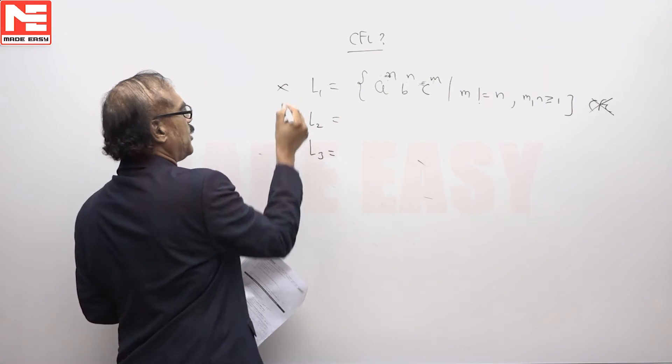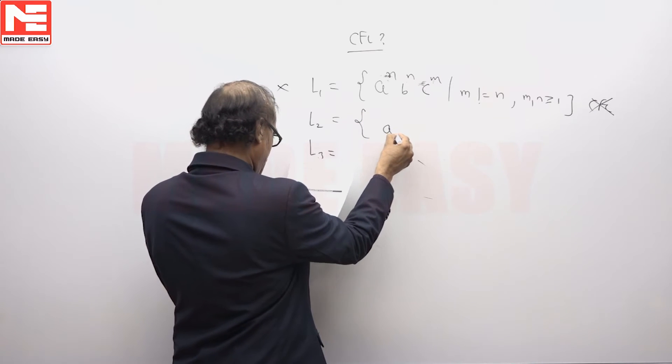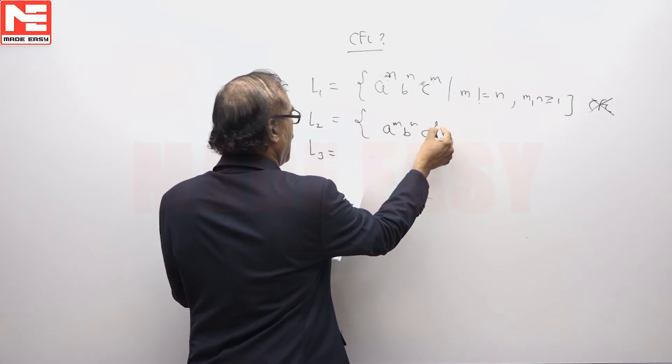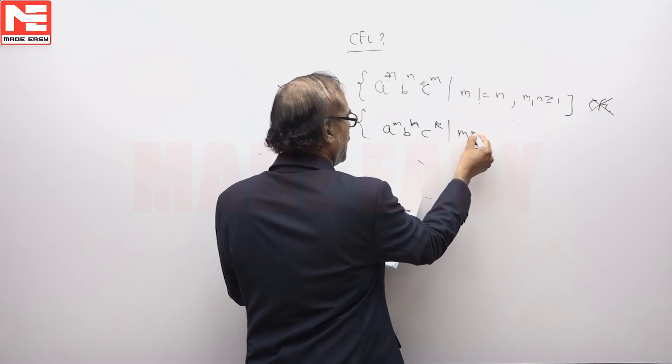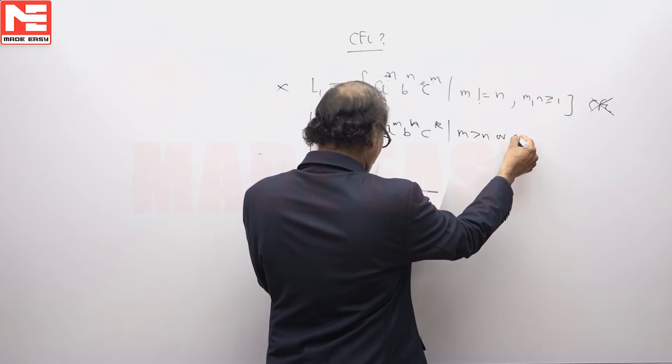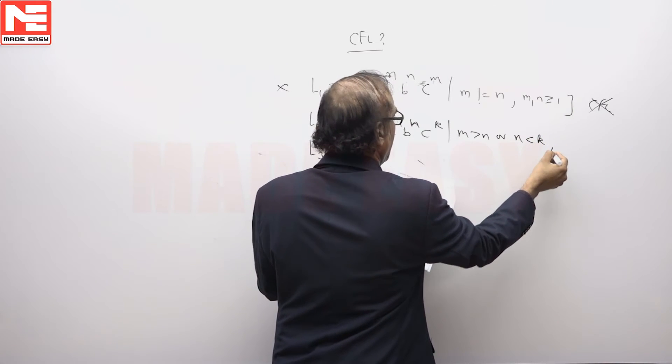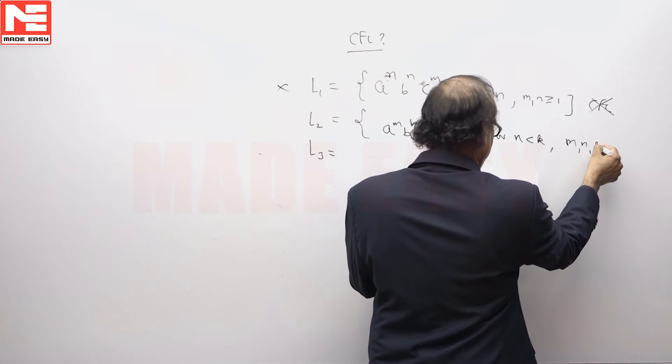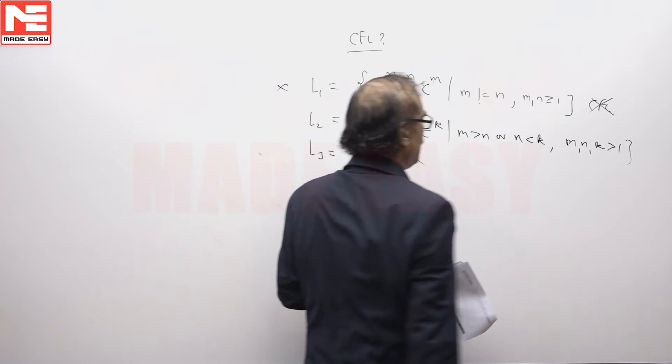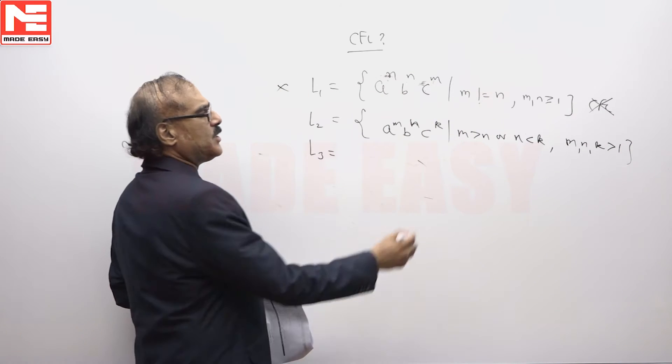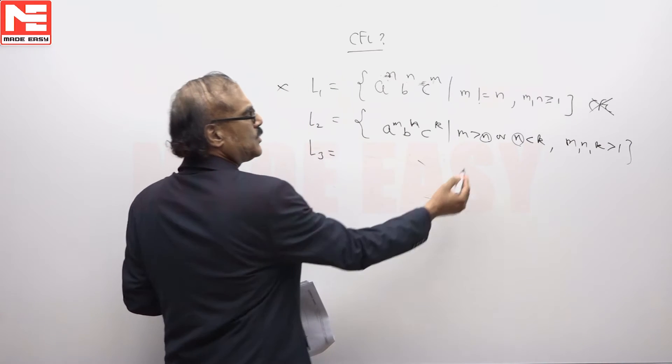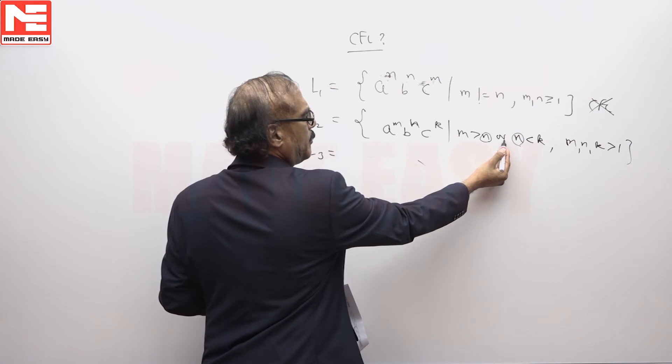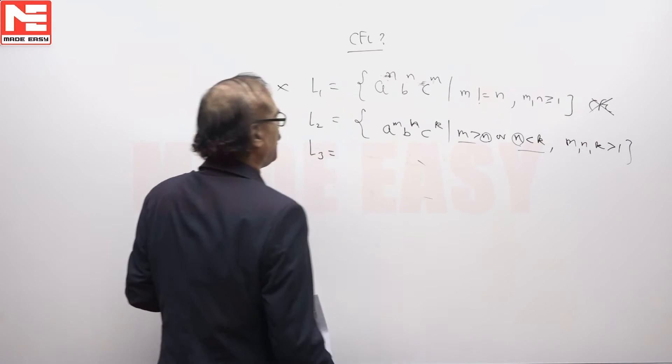Now let us come to L2. L2 is given as a^m b^n c^k and it is given that m greater than n or n less than k, again m, n, k are all infinite. Notice here you are comparing n twice but only thing this is with OR. So that is not a problem, NPDA can do it but not DPDA. This is a CFL but not DCFL.